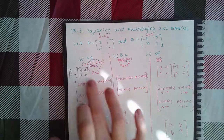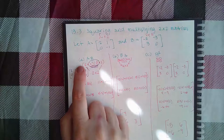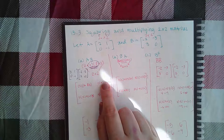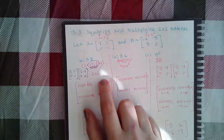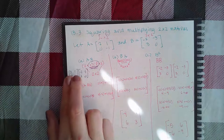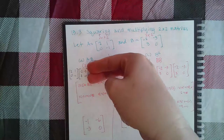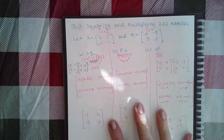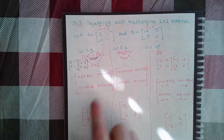To get the element in the first row, first column of the result, multiply the first row of A by the first column of B. To get the element in the first row, second column, take the first row and multiply by the second column of B. So: two times negative three, and one times zero, respectively.